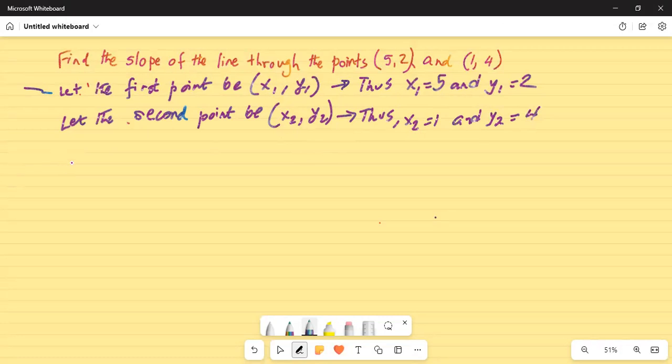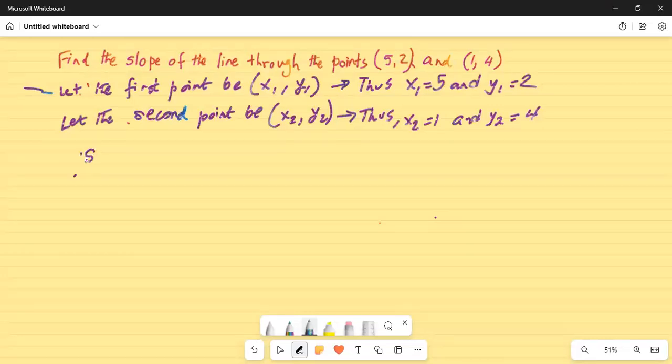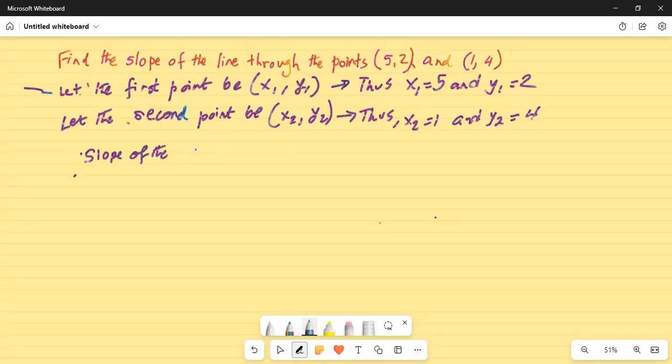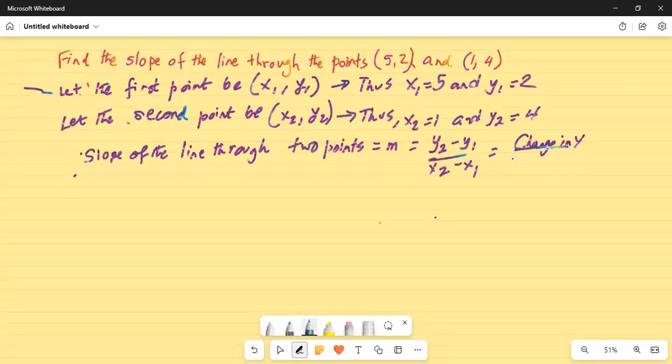The formula for the slope: slope of the line through two points is m = (y2 - y1) / (x2 - x1), which is the same as change in y divided by change in x.